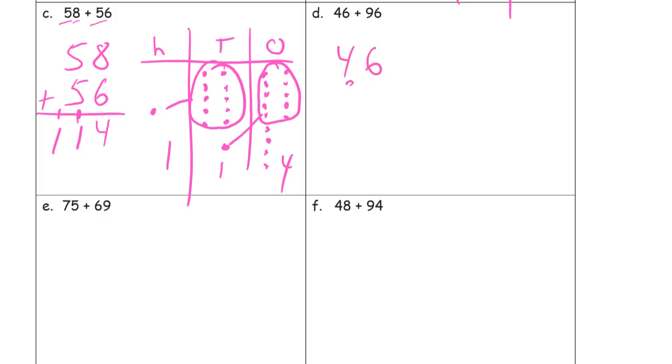46 plus 96. Two sixes is 12. That's a 10 and a 2. And then here we have a 10 right here and 4 more is 14. So that's going to be 100 with 4 tens left. 142.